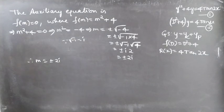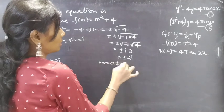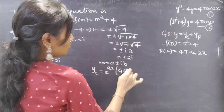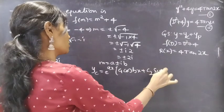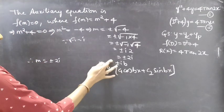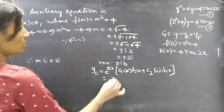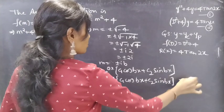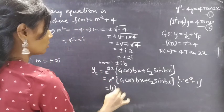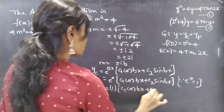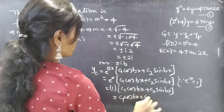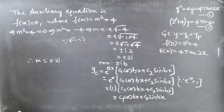We know that when the roots are complex conjugates m = a ± ib, the complementary function is yc = e^(ax) [c1 cos(bx) + c2 sin(bx)]. In our case a = 0, so yc = e^(0) [c1 cos(bx) + c2 sin(bx)] = 1 × [c1 cos(bx) + c2 sin(bx)] = c1 cos(bx) + c2 sin(bx). Let's apply this formula to find our complementary function.